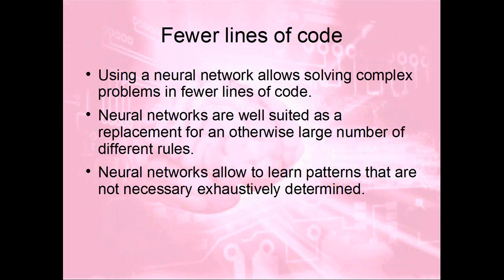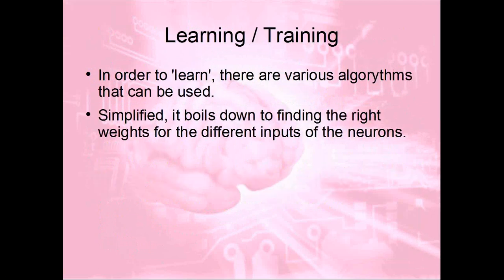A neural network allows learning patterns without having to put every single rule in place yourself. An important aspect is learning and training. We feed data into the neural network once it is created. Training is essentially finding the right weights for every neuron, so that when we give new data to the network, it knows how to recognize that data and make the right decision. So we have learning and training — we'll see it in the code example.